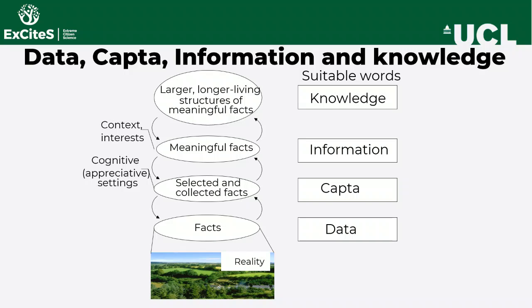First we have reality, and it is rich and complex — not all of it can be captured through specific identification of facts that can be clearly defined and separated. The facts that are well defined and can be captured we call data. Above data, we will use the idea of CAPTA: facts that are actually collected from the real world.